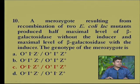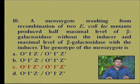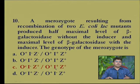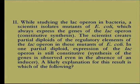In option C, when lactose is absent a particular level of beta-galactosidase expression is seen, but when lactose is present the repressor bound to the operator is removed, resulting in maximal level of beta-galactosidase expression. Therefore, the correct option is C.